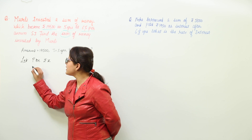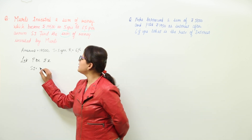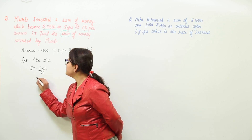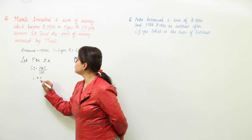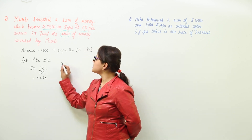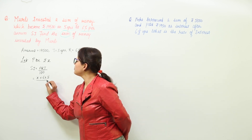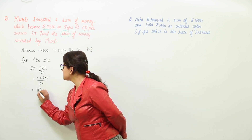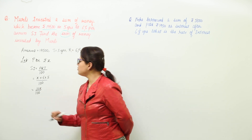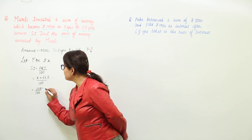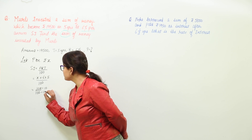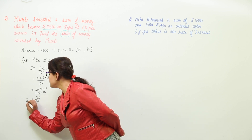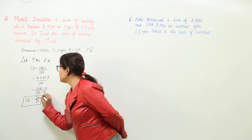Now that I have assumed principal = x, I can calculate simple interest. Simple interest = PRT/100 = x × 6 × 5 / 100 = 30x/100. Dividing numerator and denominator by 10, simple interest comes out to be 3x/10.